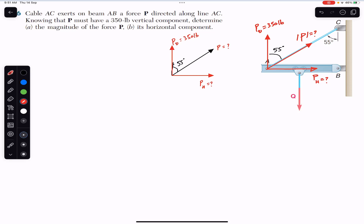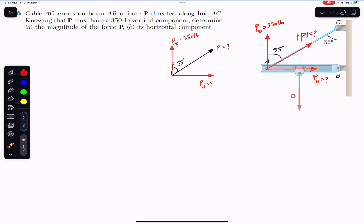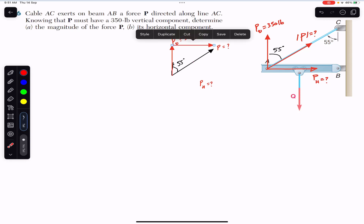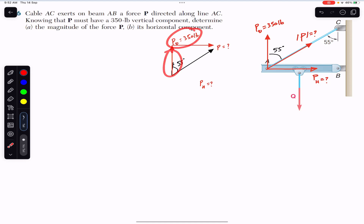As we know, the vector sum of P-vertical and P-horizontal — since these are the components of force P — by the head-to-tail rule, adding them gives us force P. So P-vertical plus P-horizontal gives us vector P. Both P-vertical and P-horizontal are the rectangular components of force P, and force P makes 55 degrees with the vertical.